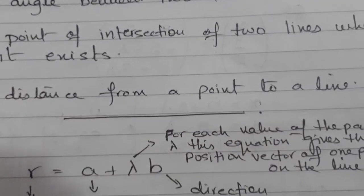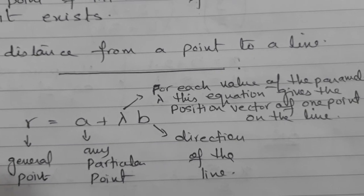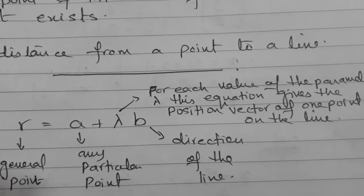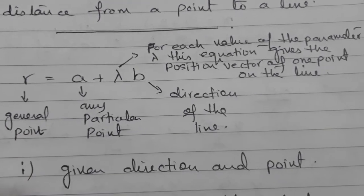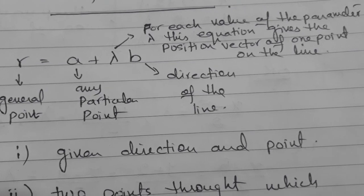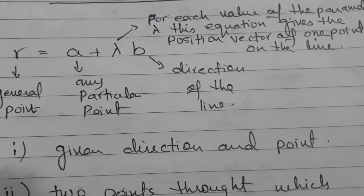So let's start with number one, vector equation of a line. When you have to find the vector equation of the line, there are two possibilities. Number one is that you are given a direction of the line and a point, which is a very straightforward question.